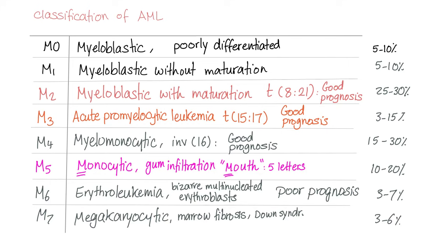To remember M3: it's associated with DIC — 3 letters. And you can treat M3 with vitamin A — also 3 letters. This is all-trans retinoic acid, or ATRA. Remarkably, we can effectively treat this cancer by giving a vitamin — this is acute promyelocytic leukemia, AML subtype M3.